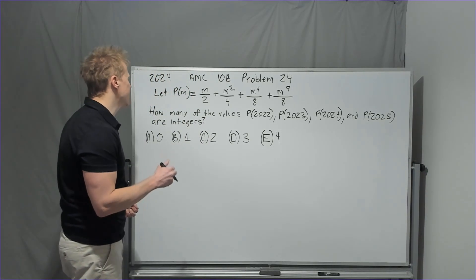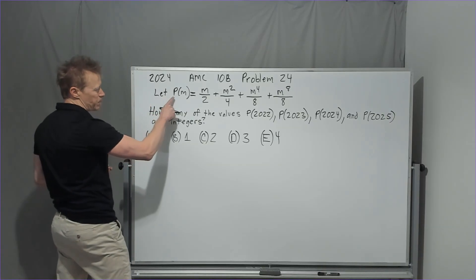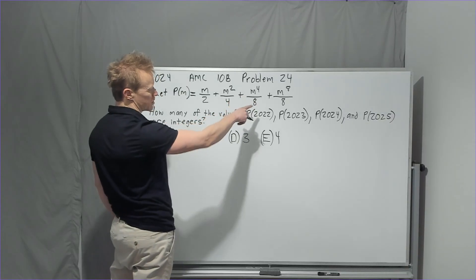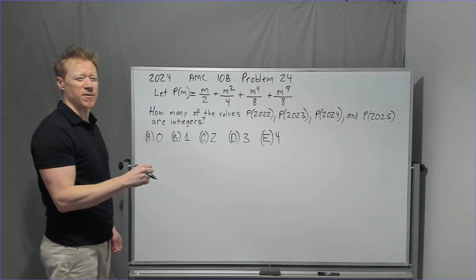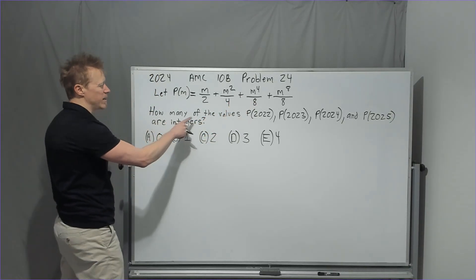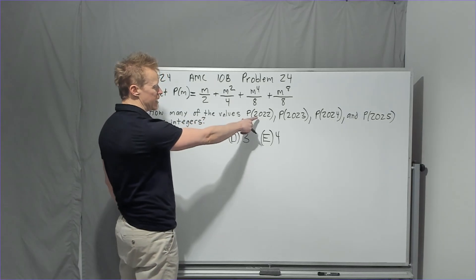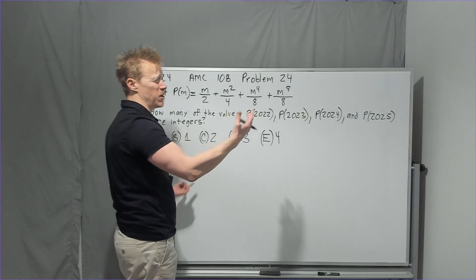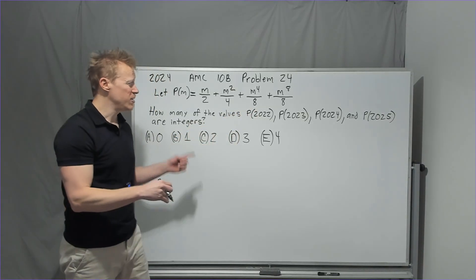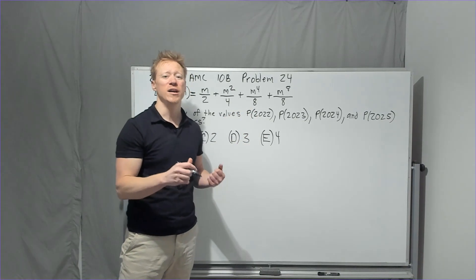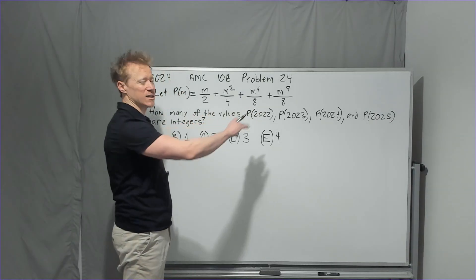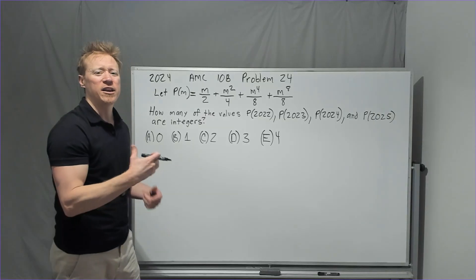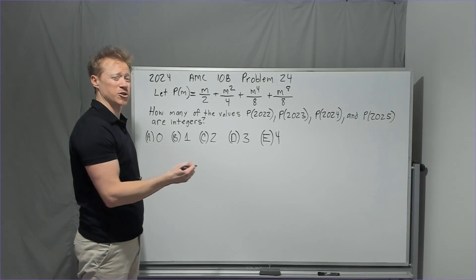Let's get started on this one. Let P(M) equal M/2 + M²/4 + M⁴/8 + M⁸/8. How many of the values P(2022), P(2023), and so on are integers? And when I say and so on, that's exactly what you should be doing. You shouldn't be reading this like a novel. You don't need to read every word. You just go, that stuff that looks just like this but different numbers. You don't have to pronounce it in your mind because you're trying to read quickly.